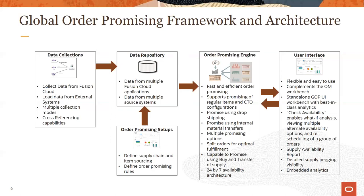The planning data repository also maintains GOP setup data defined in the GOP work area, such as ATP rules, sourcing rules, supply allocation rules, and their assignments. GOP's database-centric engine requires that any data updates made in other cloud modules be collected into the planning data repository before they can be reflected in the GOP engine. Users can interact with the GOP engine through a UI that enables simulations, viewing availability options, and offers out-of-the-box features like reports, analytics, and related capabilities that improve order promising efficiency.